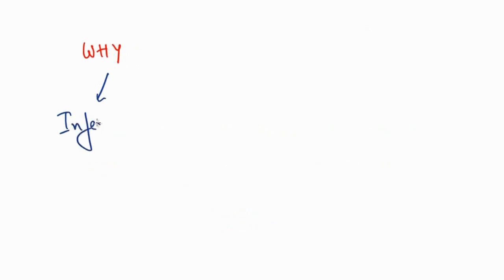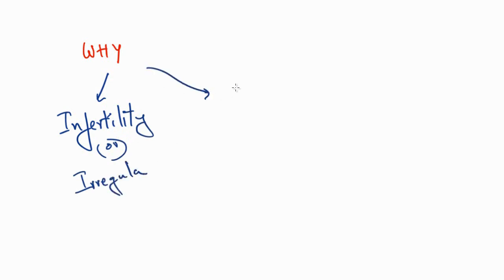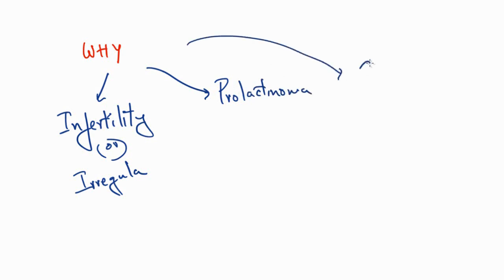The major symptoms seen in the presence of prolactin disorders are: first, if any person is coming with symptoms of infertility or irregular menstruation; second, persons having symptoms of prolactinoma — a prolactin-producing tumor; and third, complaints of galactorrhea, which is excess production of milk even during non-pregnant stages.